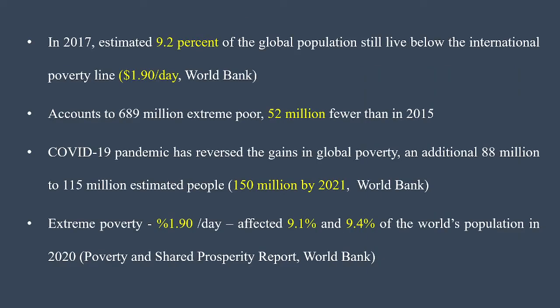Based on the World Bank report, $1.90 per day is standardized to measure whether a household is under or above the poverty line. An estimated 9.2 percent of the global population still lived below the international poverty line in 2017, which was 52 million fewer compared to 2015 — showing a gradual decline. However, after COVID-19, an additional 150 million people have been pushed to the global poverty line.